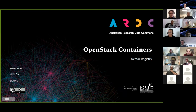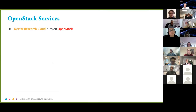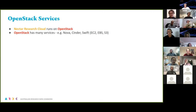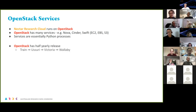My name is Jake. I'm with ARDC in core services. We run the Nectar Research Cloud, which is a cloud much like AWS and GCP, but we are of course much more. Today I'm going to talk about what we're doing in the containerization space for Nectar. Nectar Research Cloud runs on OpenStack, which has many services like Nova, Cinder, and Swift — the functional equivalent of EC2, EBS, and S3. Other services are essentially just Python processes. OpenStack has a half-yearly release cycle going alphabetically — Ussuri, Victoria, Wallaby — and Nectar takes the upstream code, tests and patches it, then upgrades the production cloud.